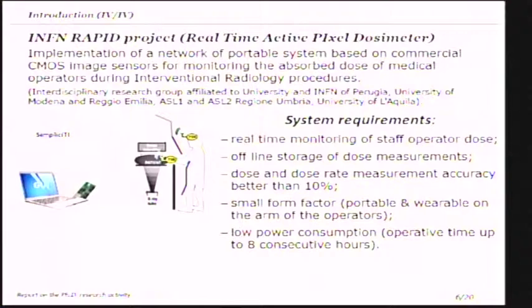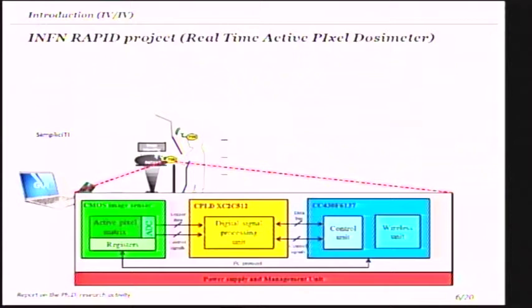Based on a commercial image sensor to monitor in real-time the absorbed dose of the medical operator. The system requirements are: real-time monitoring of the dose, offline storage of dose measurements, accuracy better than 10 percent — which is the actual accuracy of passive dosimeters — portable device, and low power consumption. The dosimeters are worn by the operator on different parts of the body, in particular on the areas most exposed to x-ray radiation.